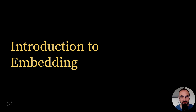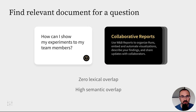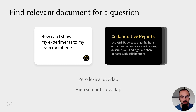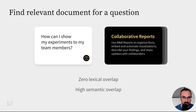Embeddings help find relevant documents without relying on keyword matches alone. Consider, for example, this question and the relevant document pair. The question is: how can I show my experiments to my team members? The document talks about collaborative reports and using Weights and Biases reports to organize runs, embed and automate visualizations, and share updates with collaborators. There is zero lexical overlap between this question and answer, so if we rely on traditional search we will not retrieve this document. However, there is high semantic overlap, and this document is actually very relevant to the question.